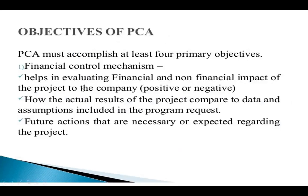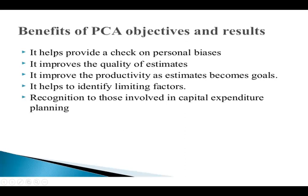The objectives of PCA relate to four primary objectives. First, the financial control mechanism: it helps in evaluating the financial and non-financial impacts of the project — whether positive or negative — and how actual results compare to data and assumptions in the program request, and future actions necessary regarding the project. Second, it helps provide a check on personal biasness. It improves the quality of estimates, and it improves productivity as estimates become the goal.